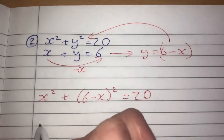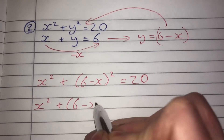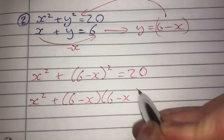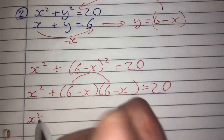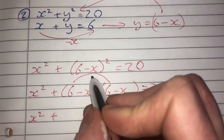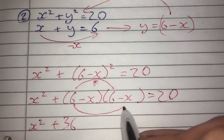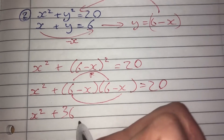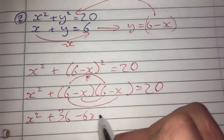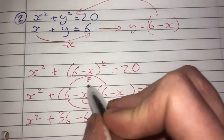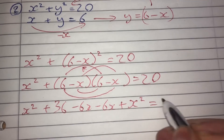The first equation is x squared plus y squared, and y squared becomes (6 minus x) all squared. We're going to use FOIL to multiply that out — there's a previous video if you're unsure about multiplying out two brackets using FOIL. Expanding: first gives 36, outer gives minus 6x, inner gives minus 6x, and last gives positive x squared. So we have x squared plus 36 minus 6x minus 6x plus x squared equals 20.